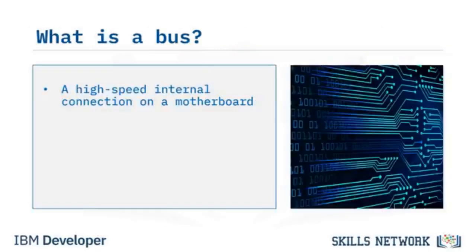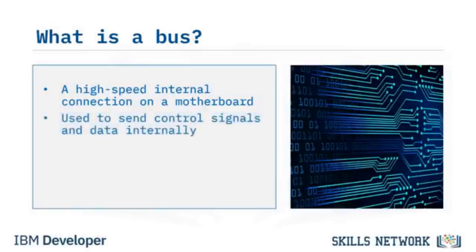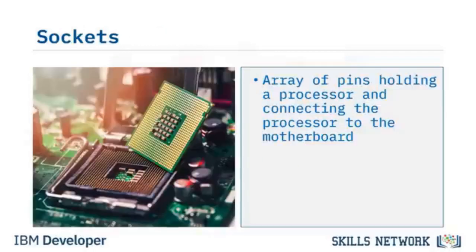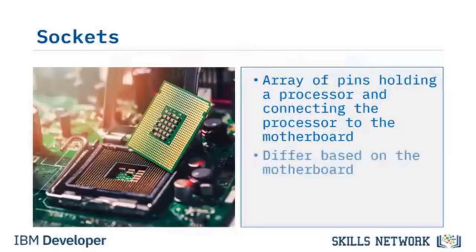A bus is a high-speed connection embedded as printed circuits on the motherboard. A bus sends control signals and data among the CPU and other internal components — it's like the information superhighway of the computer. A front-side bus carries data between the CPU and the memory controller hub, or NorthBridge. A socket is the array of pins and securing mechanism that holds a processor in place and connects the processor to the motherboard.